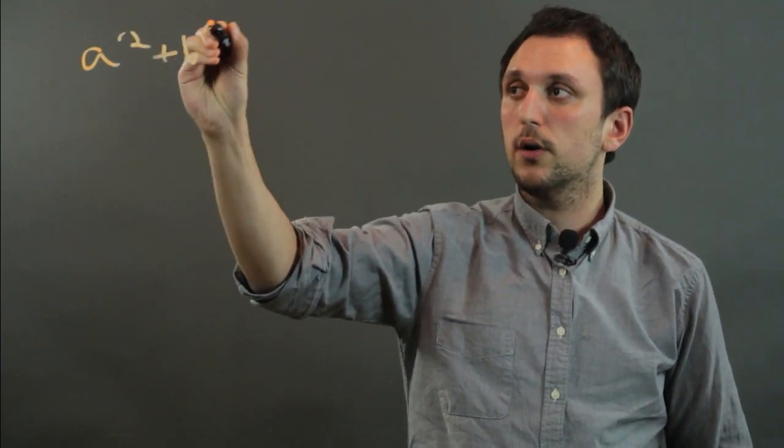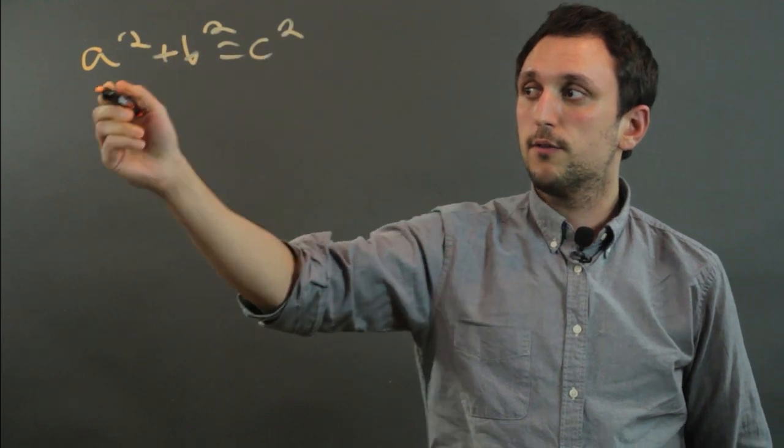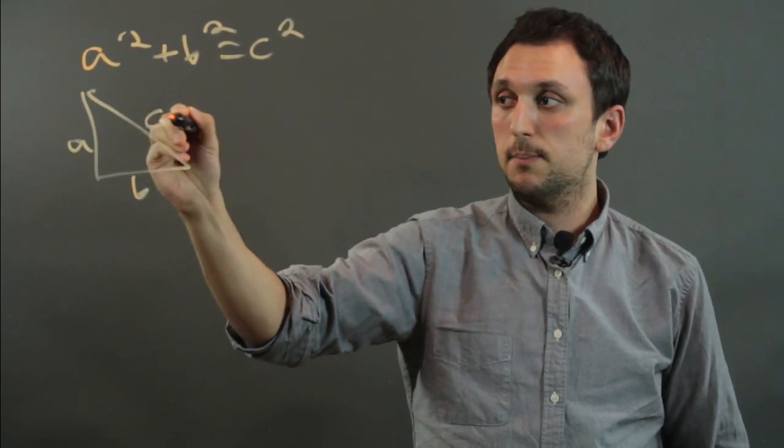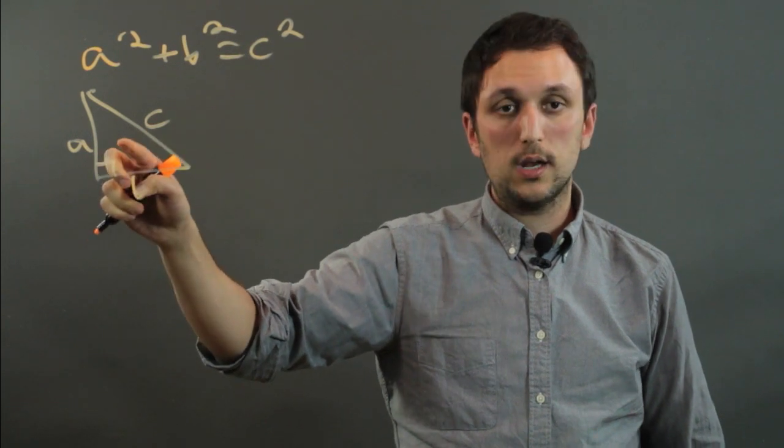Now, first put the theorem on the board. It's A squared plus B squared equals C squared for any right triangle with leg A, leg B, and hypotenuse C opposite the right angle.